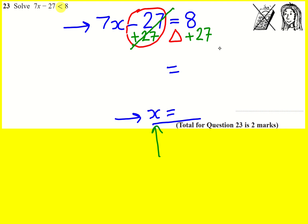On the right hand side, that leaves me with 35 by adding these two things together. What am I left with on the left hand side? Well, this bit went here and I'm just left with 7x.